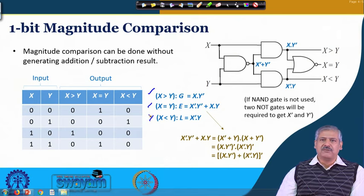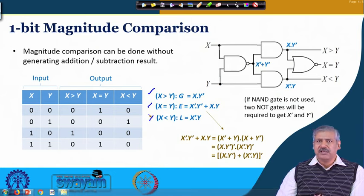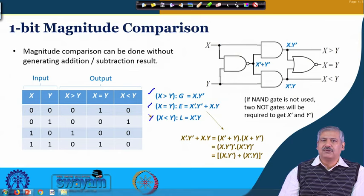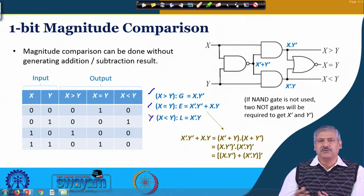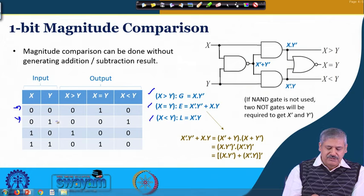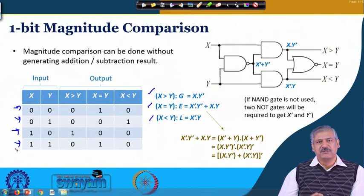We will go for 4-bit number comparison or larger number of bits. We begin with 1-bit magnitude comparison. Two numbers are of 1 bit, so if x and y are 1 bit, the possible combinations for comparison are: x=0 y=0, x=0 y=1, x=1 y=0, and x=1 y=1. These are the 4 possibilities.